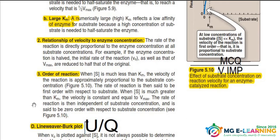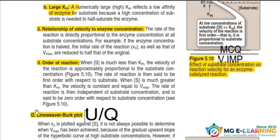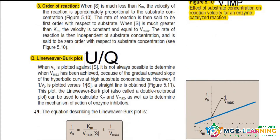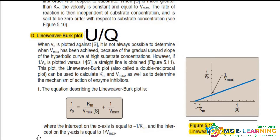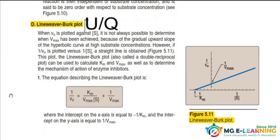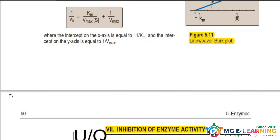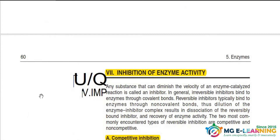The Lineweaver-Burk Plot is a very famous UQ — you have to do this completely, including the graph. Moving on to the next page, inhibition of enzyme activity is also a very famous UQ.